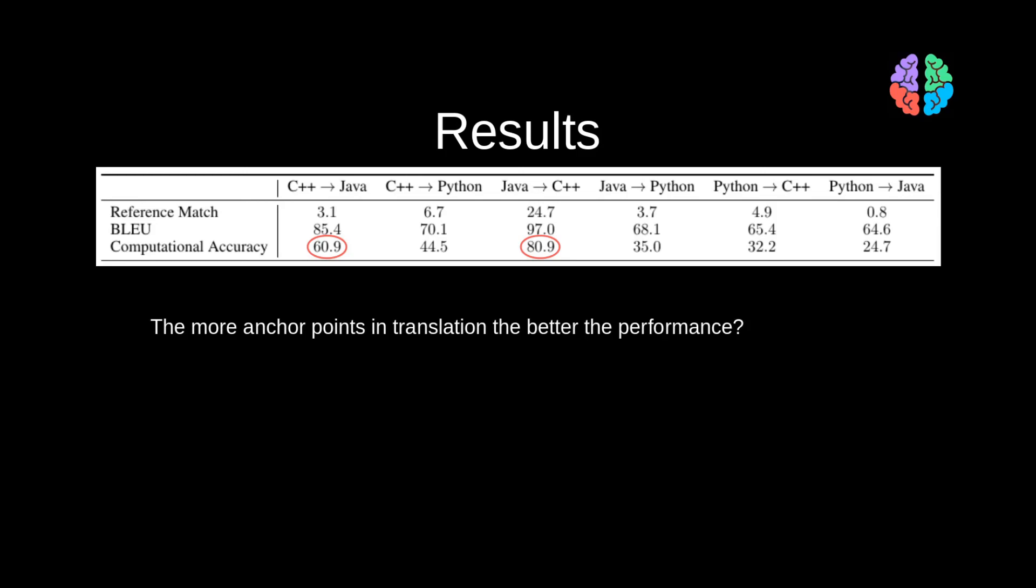Let's recollect the anchor points that we discussed earlier. There are a lot of anchor points or common keywords between C++ and Java, and I think that's played a major role for better performance between these two languages. Also, even as humans, we find moving from C++ to Java very easy compared to moving from C++ to Python. So, will machines overtake humans in programming? Let's wait and watch. We don't know yet.